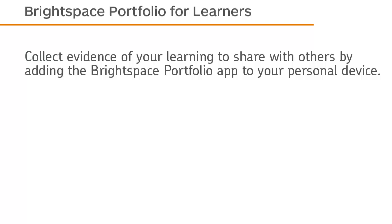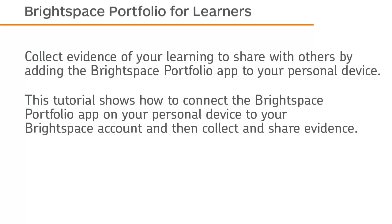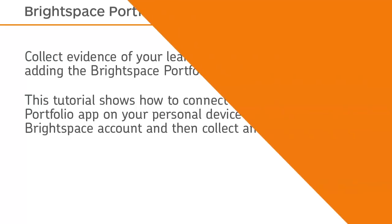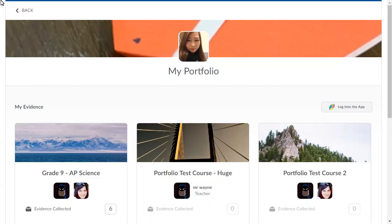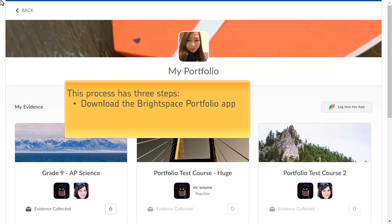Collect evidence of your learning to share with others by adding the Brightspace Portfolio app to your personal device. This tutorial shows how to connect the Brightspace Portfolio app on your personal device to your Brightspace account and then collect and share evidence. This process has three steps: downloading the Brightspace Portfolio app from your device's app store, copying or printing the login details, and making the connection on your device.